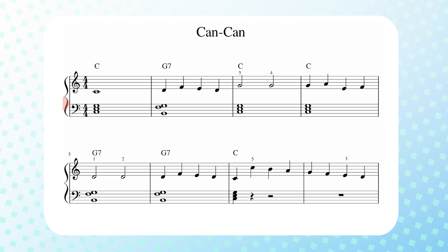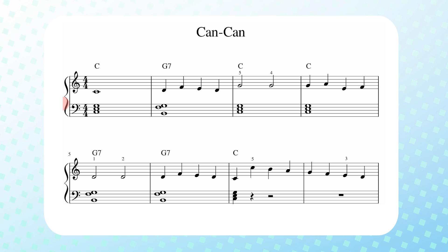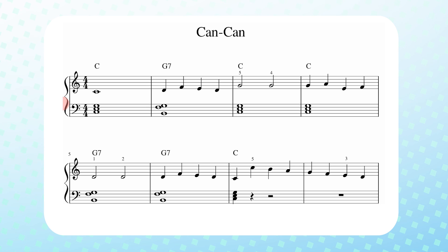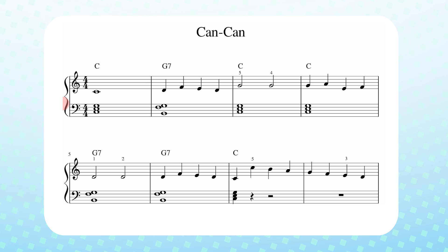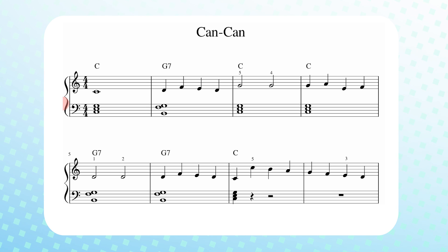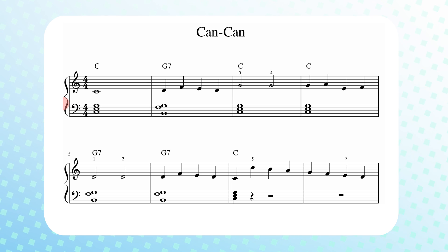Marches are probably the most common user of cut time, just because they have a fast tempo and they're usually in duple meter. They're counting in one, two — one, two — one, two. If you think of that jarring feel of a march, that would be a really good example of cut time.